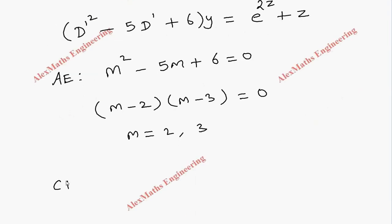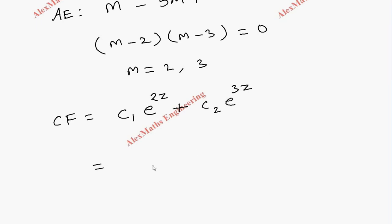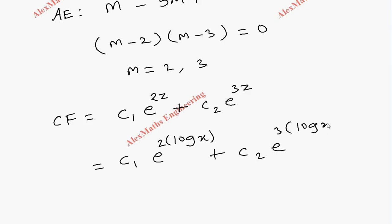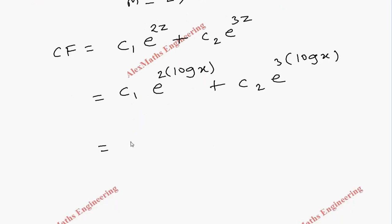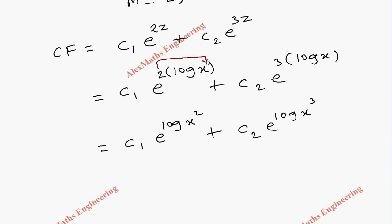Since we have two different values, the complementary function is c₁e^(2z) + c₂e^(3z). Replacing z with log x: c₁e^(2 log x) + c₂e^(3 log x). Using the power rule, this becomes c₁e^(log x²) + c₂e^(log x³). Since e^(log) cancels, the complementary function is c₁x² + c₂x³.